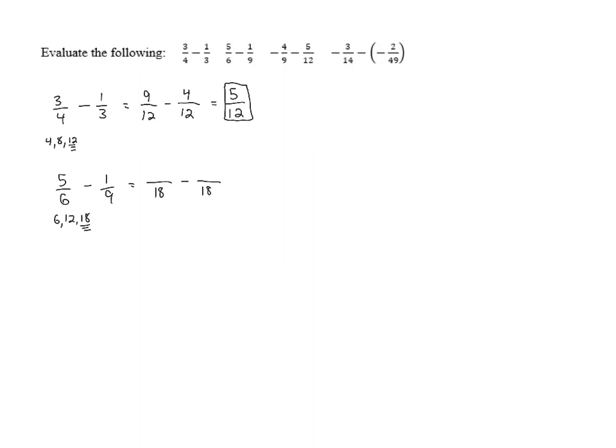Now we need to rewrite the fractions with new numerators. To get from 6 to 18, we have to multiply by 3. So then we'll also have to multiply the numerator by 3. 5 times 3 gives us 15. So that's 15/18. For the other fraction, 9 needs to get multiplied by 2 to become 18. So if we multiply the top by 2, 1 times 2 gives us 2 for our numerator.